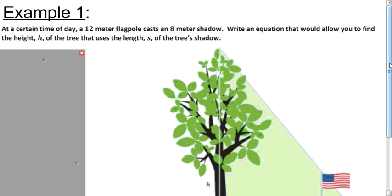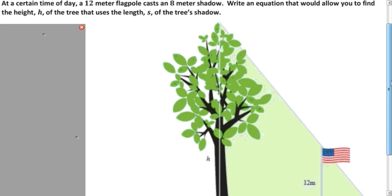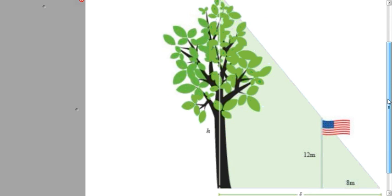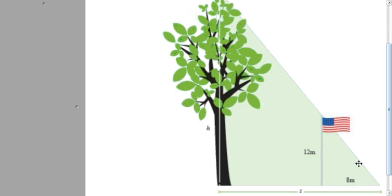In this example, we have a tree and a flagpole that are casting shadows. We want to write an equation that's solved for the height of the tree in terms of the length of the shadow it casts. Why don't you try to solve that problem, and I'll show you how I went about my solution.